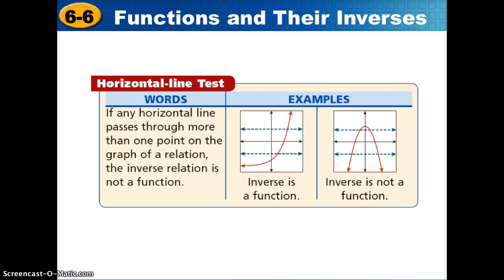In the example on the right-hand side, we have a parabola. We use the vertical line test to determine that it is a function. And then we use the horizontal line test to determine if the inverse is also going to be a function. Of course, we see it fails the horizontal line test, so we know that the inverse is not going to be a function.